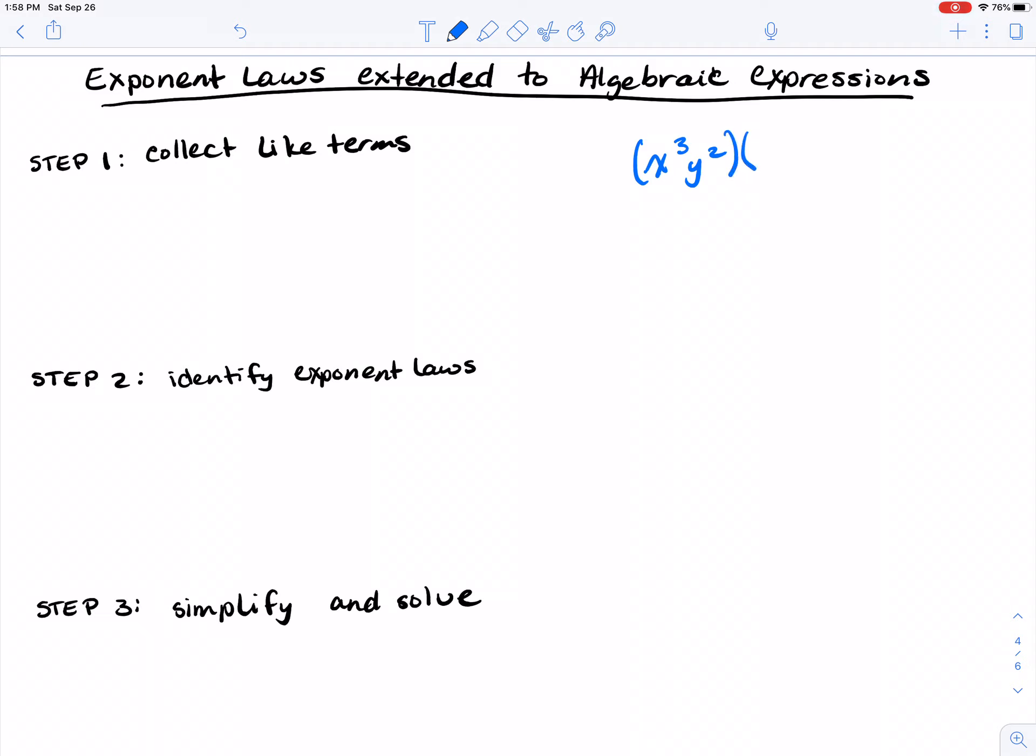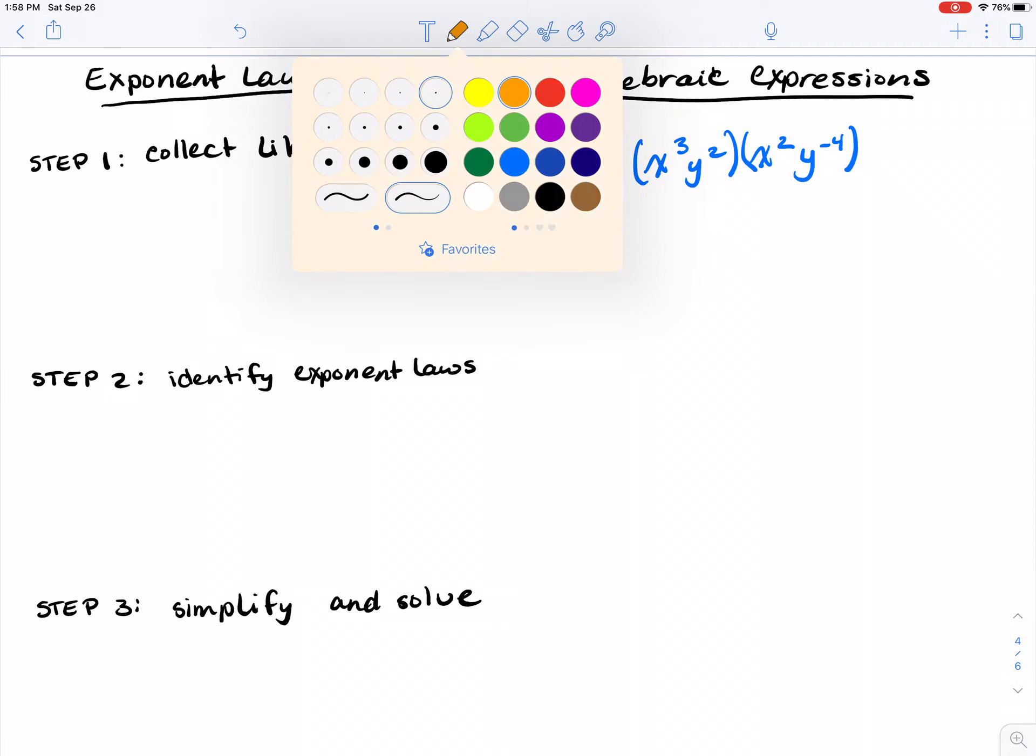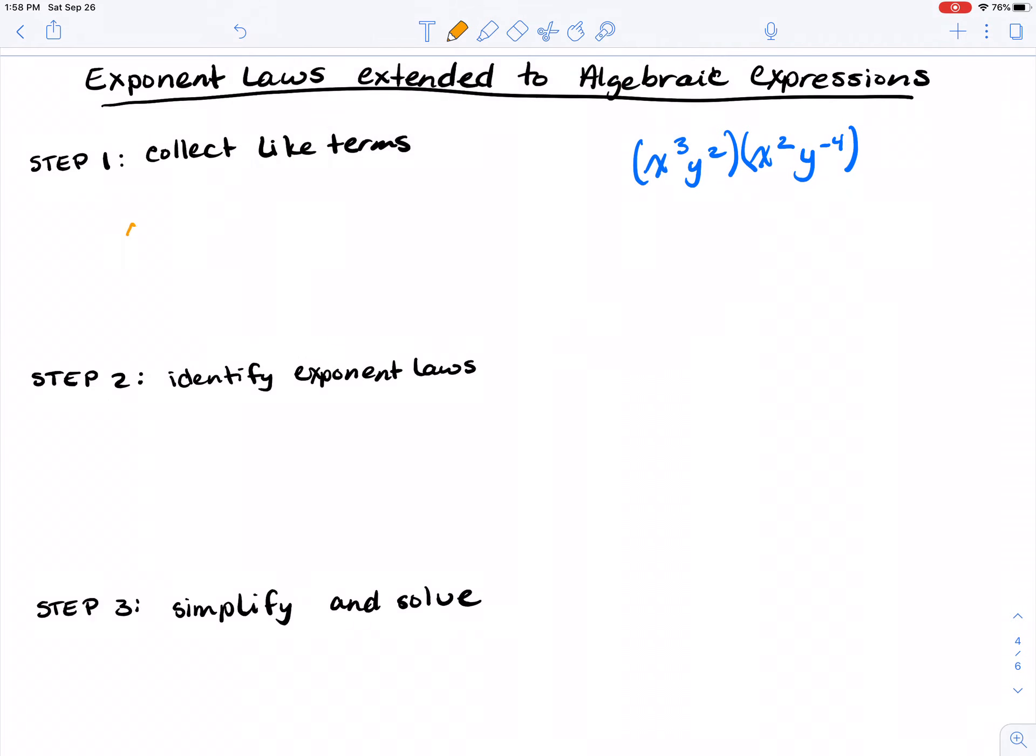We're going to take this and multiply it by x squared y to the negative 4. How do we use exponent laws to deal with this type of expression? The first thing we're going to do is collect like terms. I'm going to collect my x's together, so I have x cubed times x squared, and then collect my y's together, which is y squared times y to the minus 4.